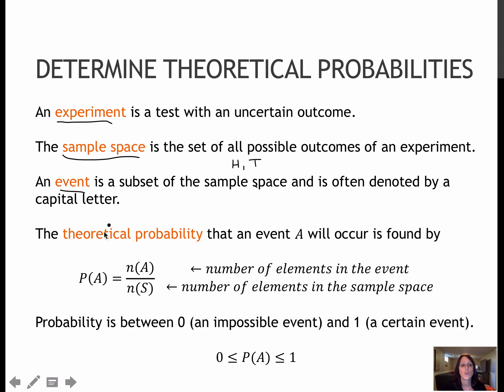Theoretical probability means this is the probability that something should happen. It's not necessarily what actually happens, it's what we are expecting to happen. And to find that probability, we're taking the number of elements in the event divided by the number of elements in the sample space. So for instance, if the sample space were heads and tails, that would be two items. And if the event is flipping heads, that was one of the two items. So the probability, theoretically, of flipping heads is one half.